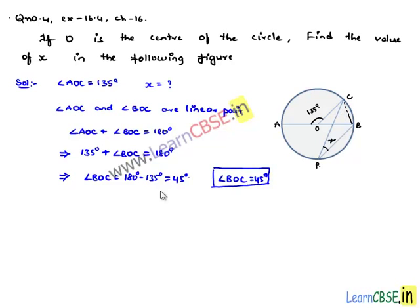Now, let us join BC. Then here, angle BOC is the angle subtended by chord BC at the center and x is the angle subtended by chord BC at some point on circle.